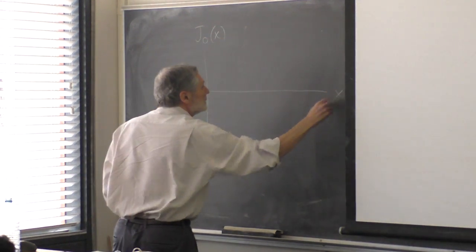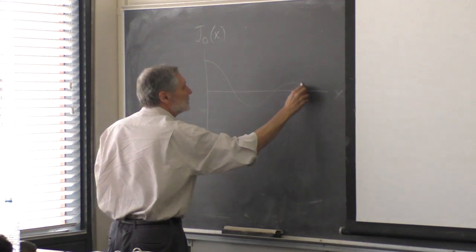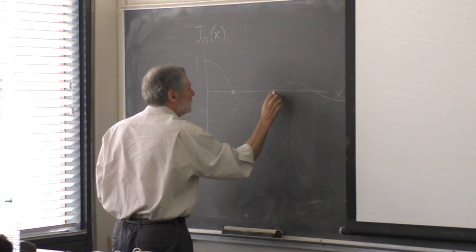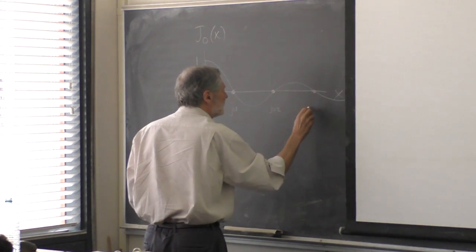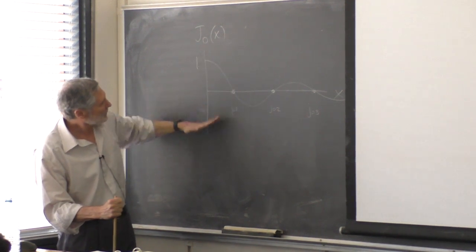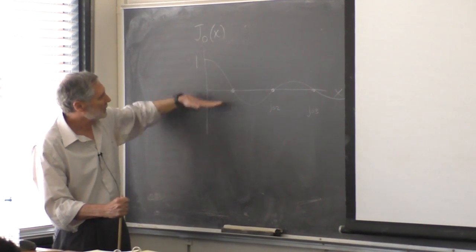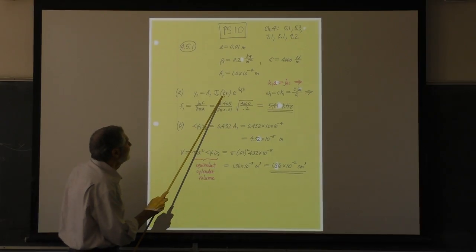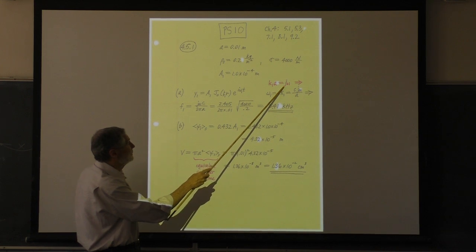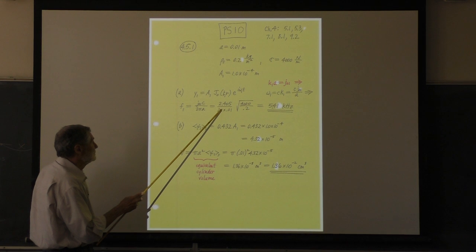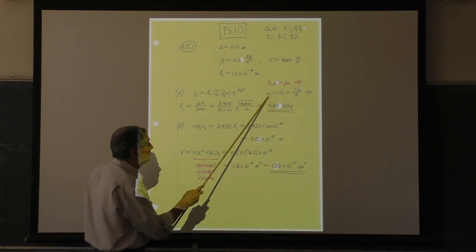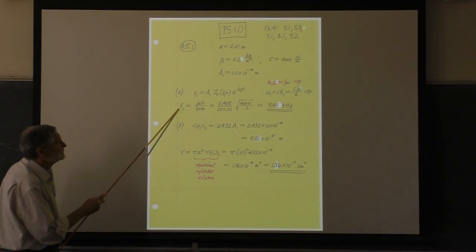The picture you want to keep in mind: the Bessel function J0 looks like a damped oscillation. The first zero of J0 is called j(0,1), equal to 2.405. For the fundamental, the boundary is at that first zero. The frequency is specified by the condition that K₁ times A equals j(0,1) = 2.405. That value of K specifies the angular frequency, and from that we get the actual frequency.